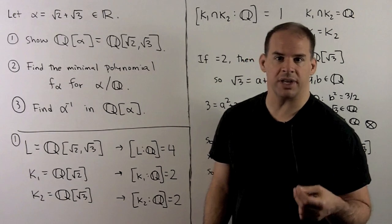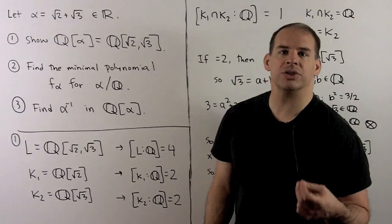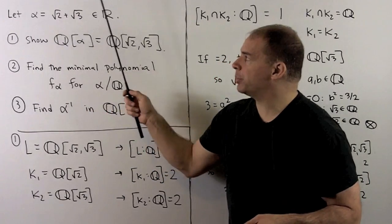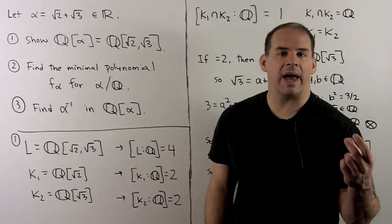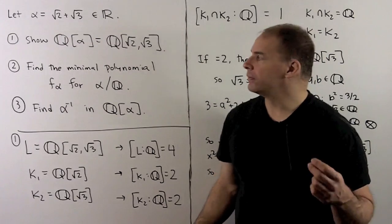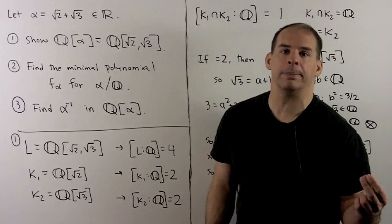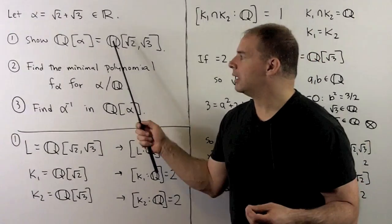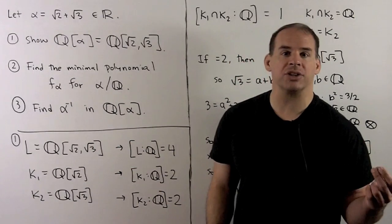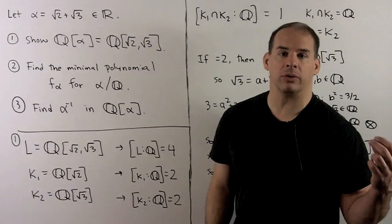Here's another example using a simple extension. In this case, the degree over the rationals is equal to 4. We have alpha equal to square root of 2 plus square root of 3 in the reals. We ask the same type of questions as in the previous example. First, I want to show that ℚ adjoined alpha equals ℚ adjoined square root of 2 adjoined square root of 3. Then we want to find the minimal polynomial f_alpha for alpha over the rationals. Finally, I want to express alpha inverse as a polynomial in alpha over the rationals.